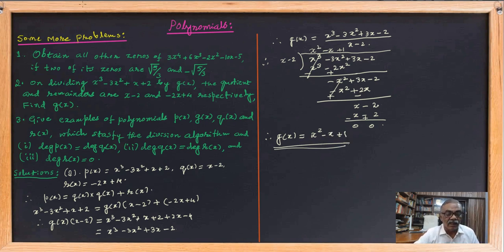So g(x) equals x squared plus 1. This is the answer for the problem, and the remaining two problems you can solve on your own.